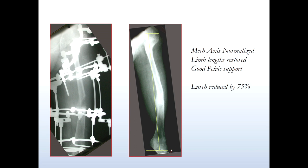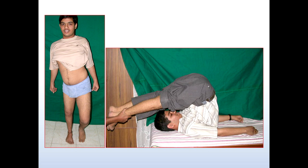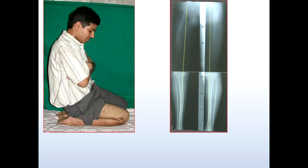We do the lengthening and the de-varus, make sure the axis is good, and with reduced lurch and good function — this is how he was.